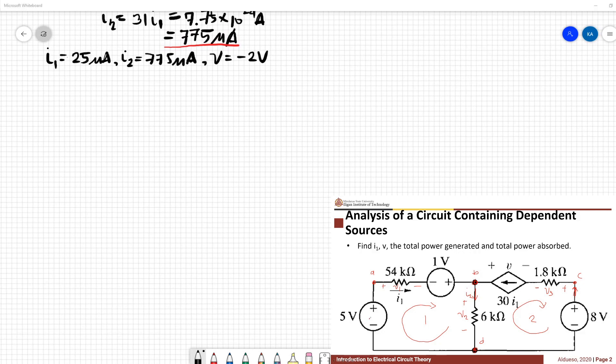I'll start from left to right. So power from the 5 volt source - the current i1 is going upwards, so it enters the negative sign of this voltage source. We have an equation based on the passive sign convention, so we have negative 5 times i1. This is equivalent to 0.125 milliwatts.